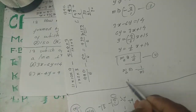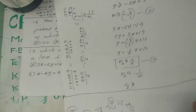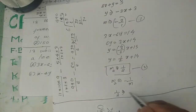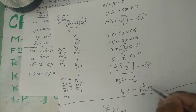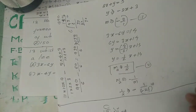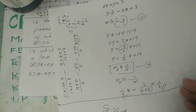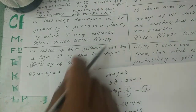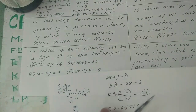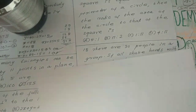The perpendicularity condition requires m1 times m2 equal to minus 1. Here (minus 2) times (1/2) equals minus 1. This condition is satisfied, so option A is the answer.